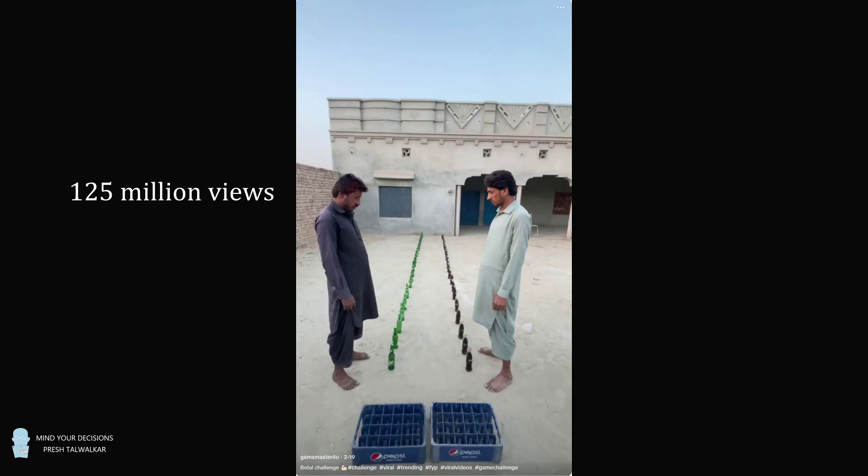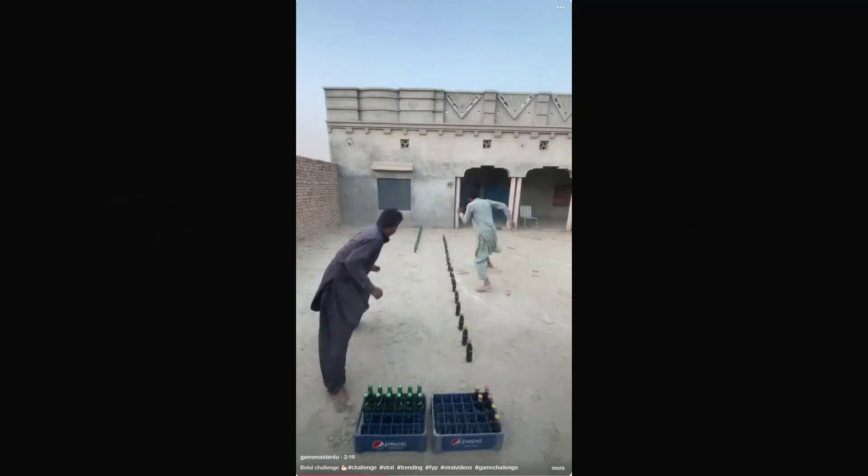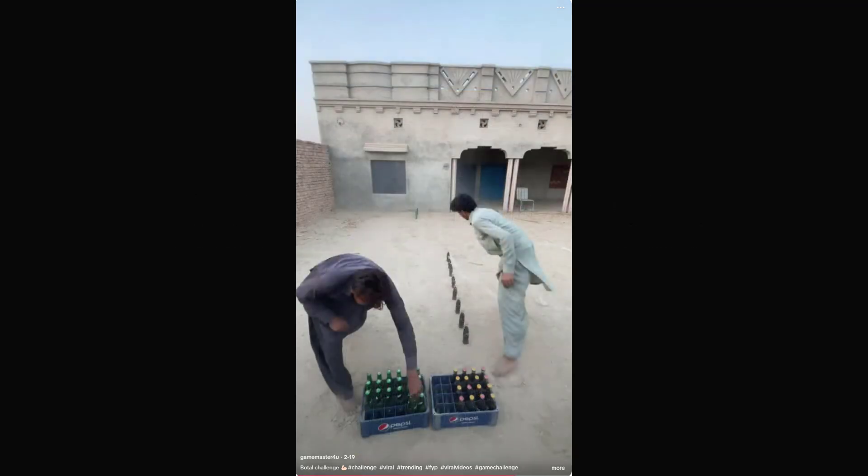But the two contestants work by different strategies. At each step, the person on the left is collecting the bottle that is closest to the crate, while the person on the right is collecting the bottle that is farthest from the crate. At first, the person on the left develops a huge advantage. By the time he has collected 12 bottles, the person on the right has only collected 6. The advantage continues. By the time the person on the left has collected 20 bottles, the person on the right has only collected 16.